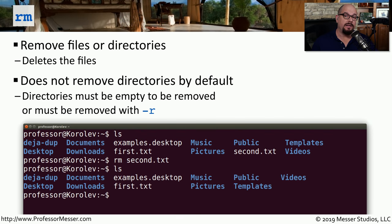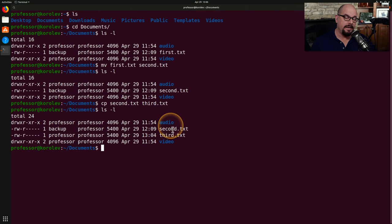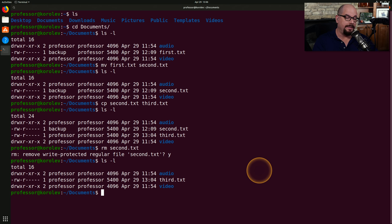To remove files in Linux, use the rm command — 'rm filename' and the file will be deleted. You can't remove a directory unless it's empty, so you'd need to remove all files first, or use 'rm -r' to remove the directory and everything within it. Now that we've copied second.txt to third.txt, let's remove second.txt using 'rm second.txt'. It asks if I'd like to remove this write-protected file — I confirm yes, and performing LS again shows second.txt is no longer on the drive.